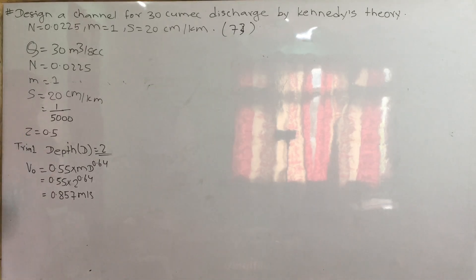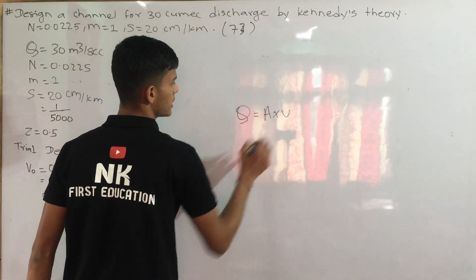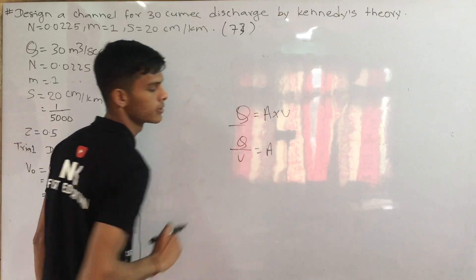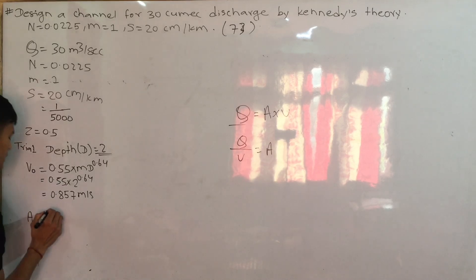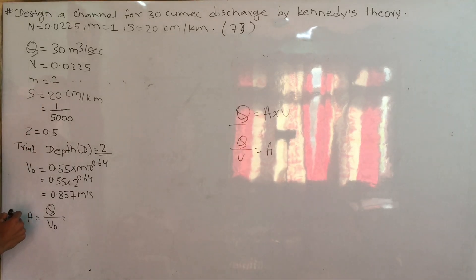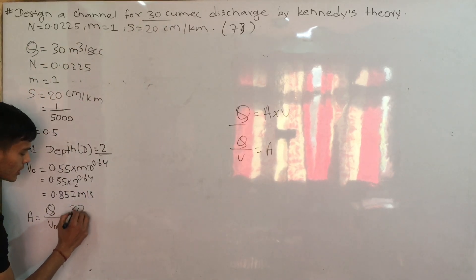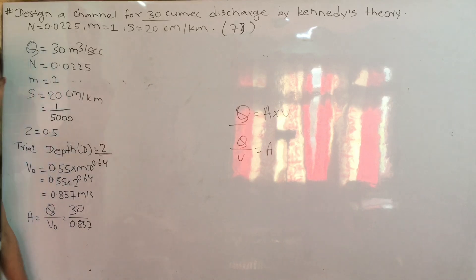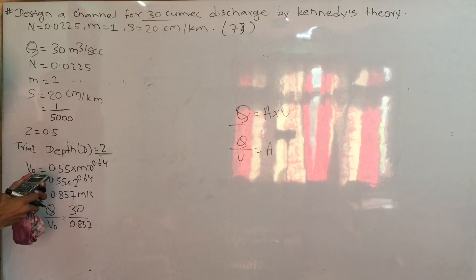This is the velocity. When I have the quantity, I am going to use the formula Q — discharge — equals area into velocity. I am going to get the discharge, then get the area. Area equals discharge divided by velocity. The discharge is 30, and 30 divided by 0.85 gives the area.